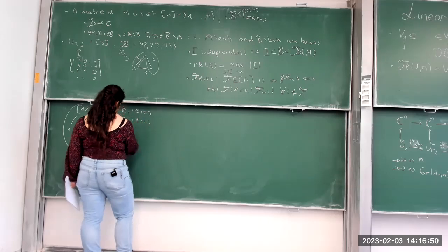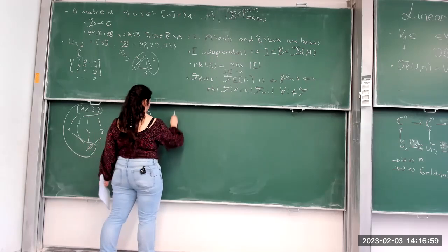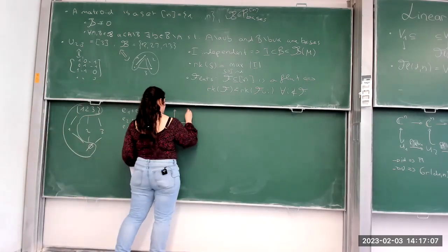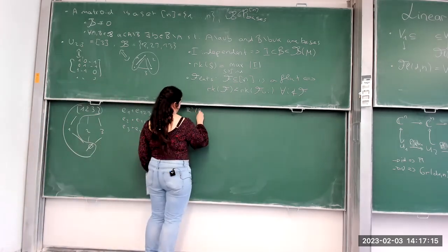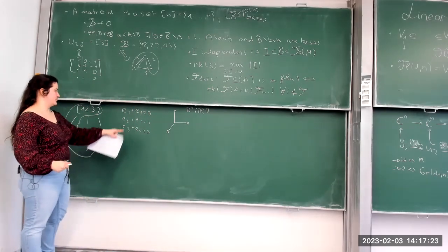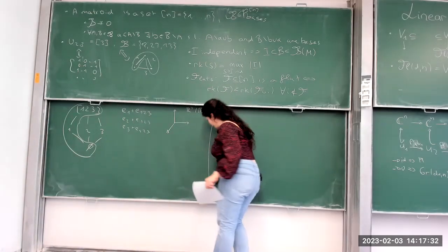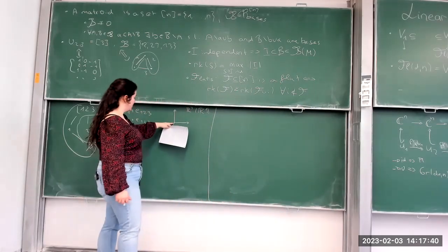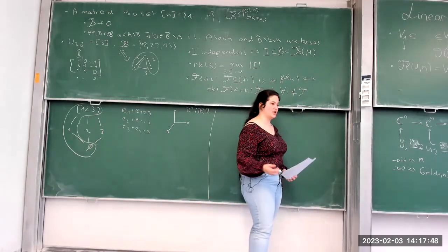Doing this for all maximal chains and writing this as a fan with these rays generating it, I obtain a tropical line. Since we are in R^3, but since e_{1,2,3} will always show up in any lattice of flats, we can mod out by the all-ones vector. So we can represent this actually in R^2. This is just your standard tropical line, which is actually the tropicalization of the algebraic linear space corresponding to this matrix. From tropical geometry, we know that tropical geometry works well with valuations.